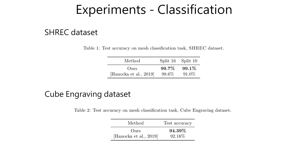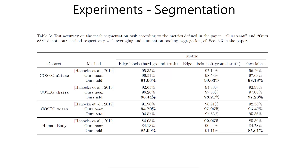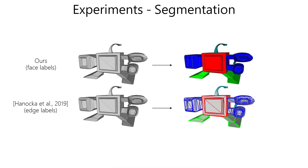Experimental evaluation shows that PDMeshNet outperforms competing methods both on mesh classification and on mesh segmentation, where we perform the comparison using several different accuracies to account for different types of predicted labels.